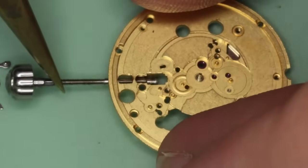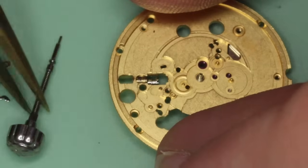Okay, we will just pull the winding stem out and you will see the sliding pinion.